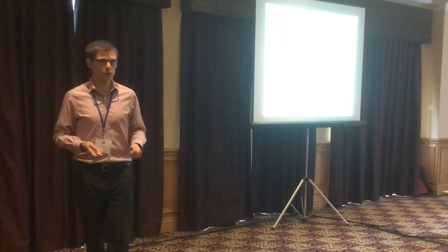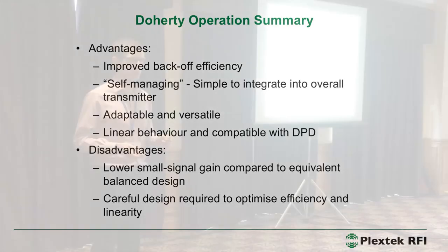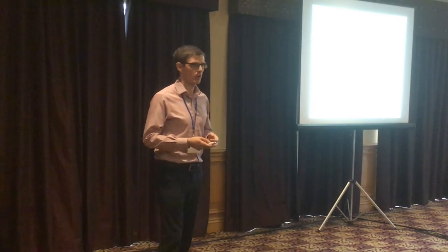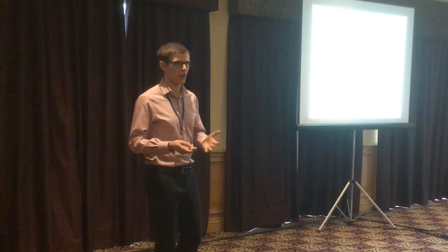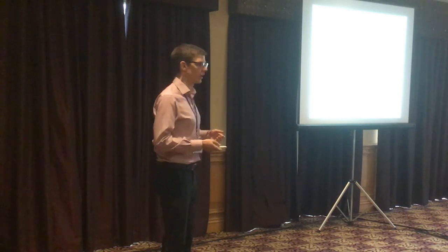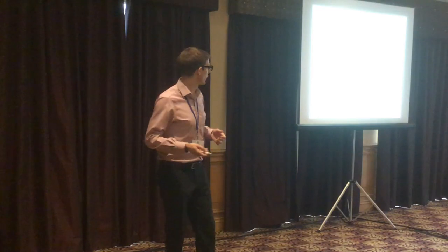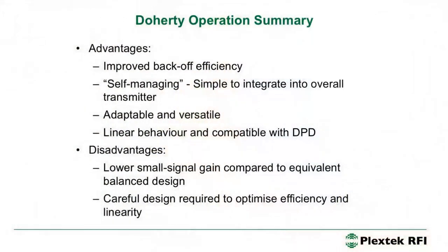There are several advantages to the Doherty amplifier. The main one is efficiency at back-off. It's also a self-managing topology — it still has one RF input, one RF output, and some DC supplies, with no DSP required to control it. The auxiliary amplifier switching on happens naturally with increasing input power if you set the biases correctly. It's simple to integrate into your transmitter, adaptable and versatile, and it gives linear behaviour compatible with digital pre-distortion, which is very important for communications applications.